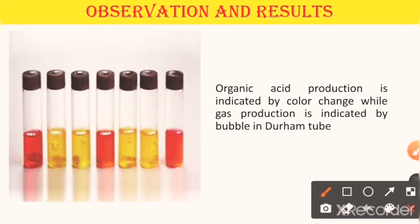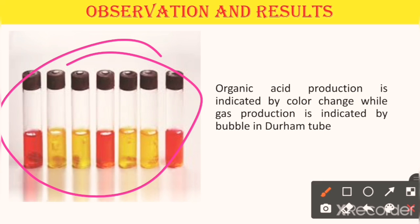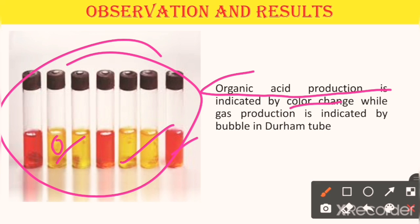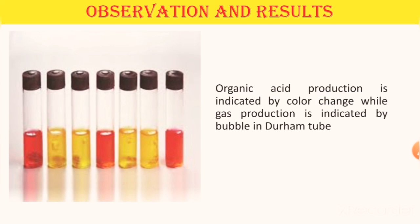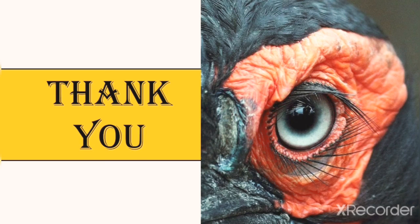This is the actual observation after the procedure. We can easily see the color change in all tubes — red, pink, or yellow color. Yellow color indicates that the test is positive, and red color indicates the test is negative. Organic acid production is indicated by the color change, while gas production is indicated by bubbles in the Durham tube. This is all about the sugar fermentation test and how we observe the fermentation of carbohydrates. Thanks a lot, guys.